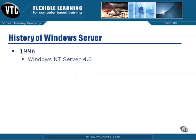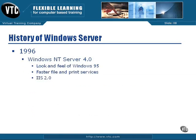In 1996, we saw NT Server 4.0, and this is where it really started to grow up. It had the look and feel of Windows 95 for the administrator desktop on the Windows Server product. It had faster file and print services, and this is huge — it introduced the Internet Information Server 2.0 web server into the Microsoft server operating system package. Now you had a free web server, and as the Internet was growing and becoming more of a force, this was huge.